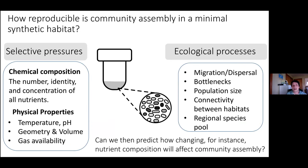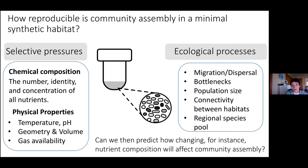The approach we follow in my lab is to study microbial community assembly in a synthetic habitat where we can know the selective pressures, the chemical and nutrient composition. We know exactly what niches we're supplying, we can fix the temperature, pH, and control all these factors. We can also control ecological processes — the rate of migration from the regional pool, the composition of the regional pool, population size, and connectivity between habitats.